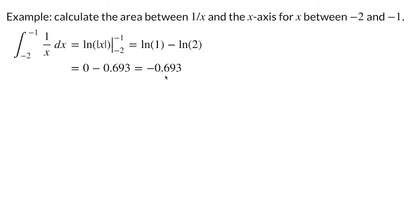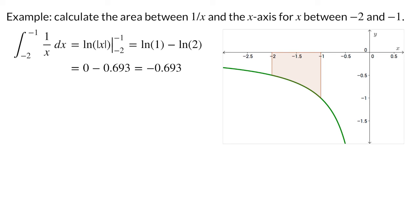We calculate that the area is negative 0.693. Wait a minute — that doesn't make sense. It doesn't make sense to have negative area. Something must have gone wrong here. Let's take a look at the graph of the function to determine what happened. Since x is negative, the function 1 over x is also negative. When trying to calculate the area, we are getting negative heights, so it makes sense that we end up with a negative number.